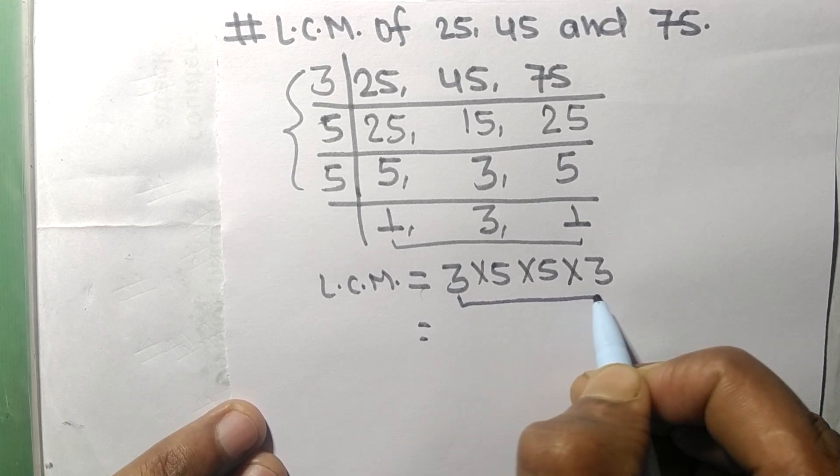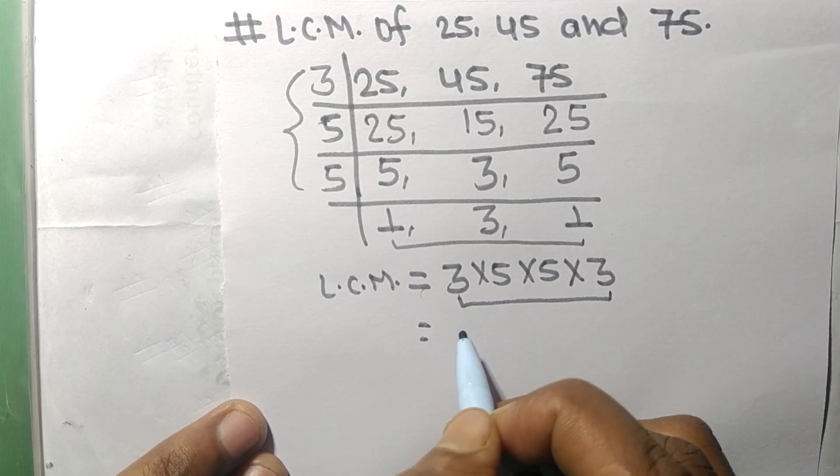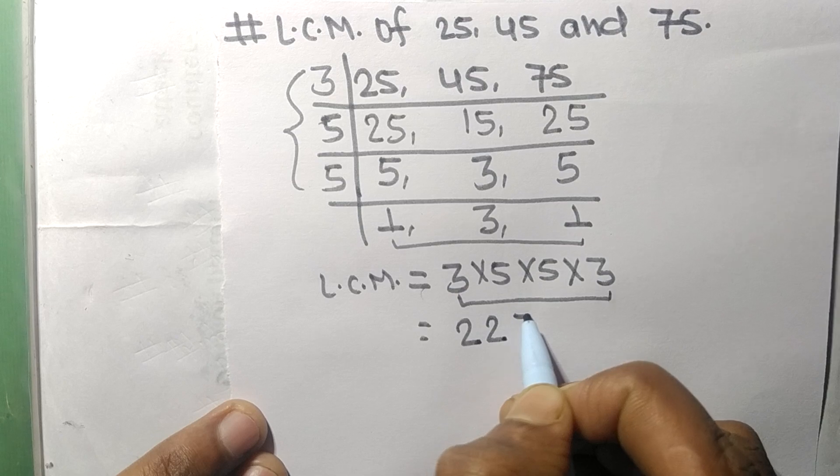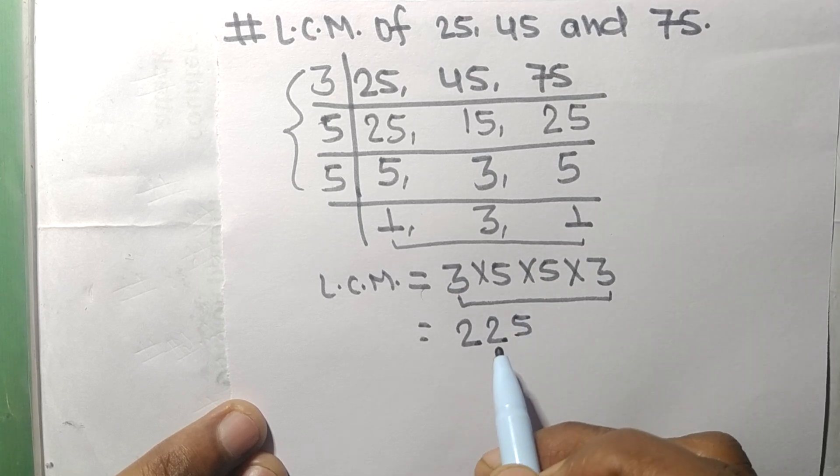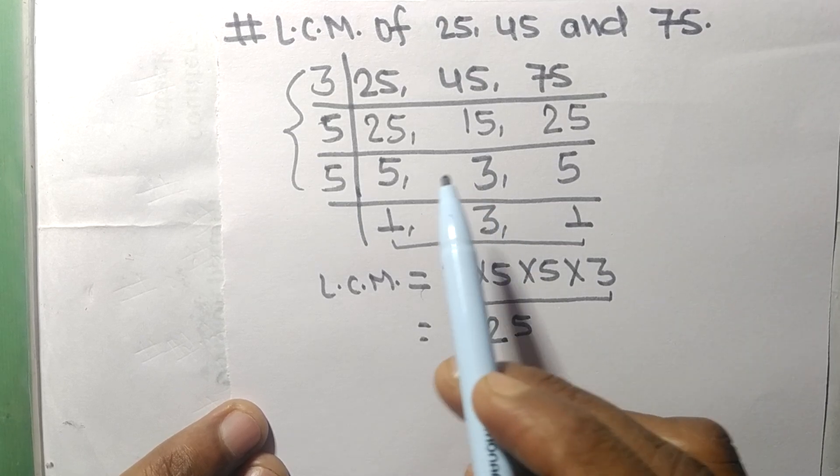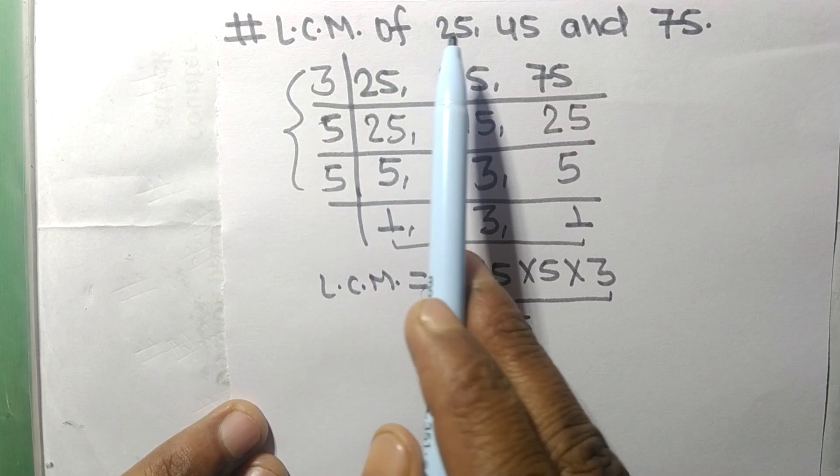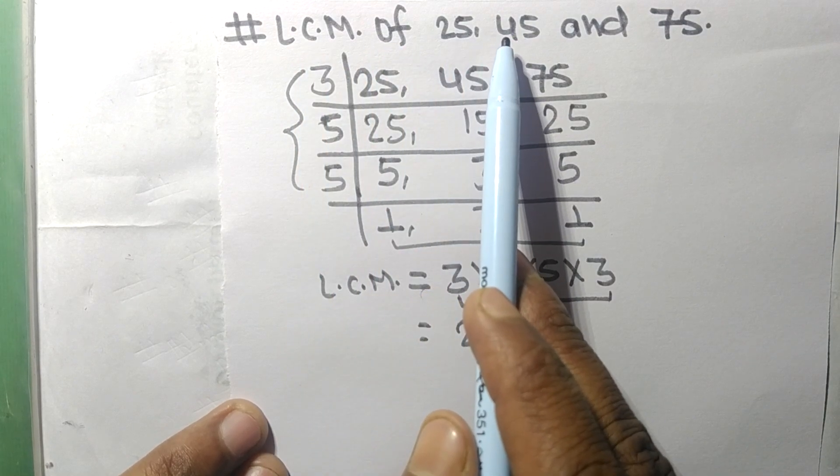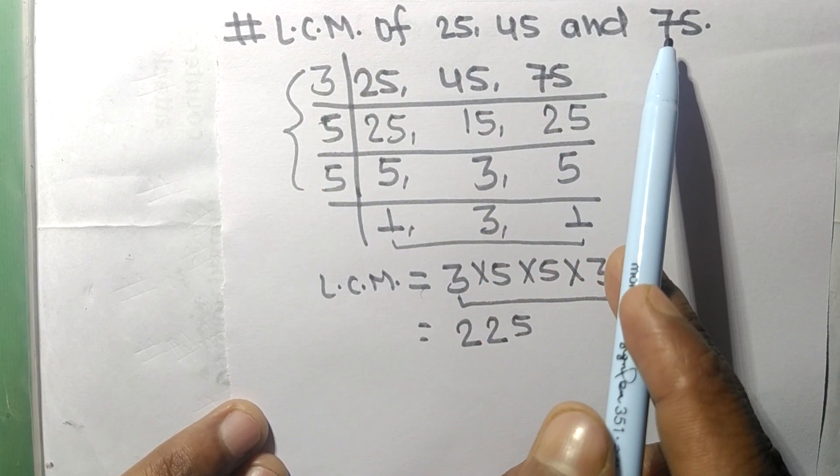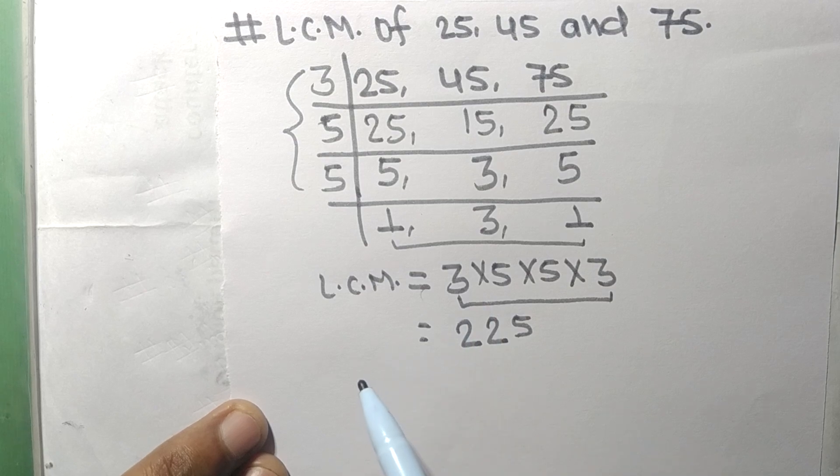By multiplying all these numbers we get 225. So 225 is the LCM of 25, 45, and 75. So this much for today and thanks for watching.